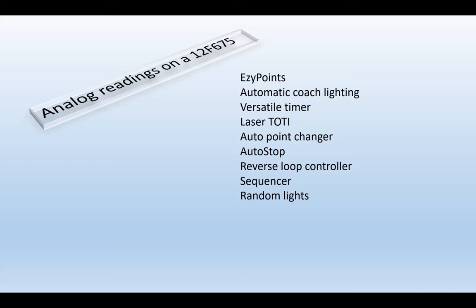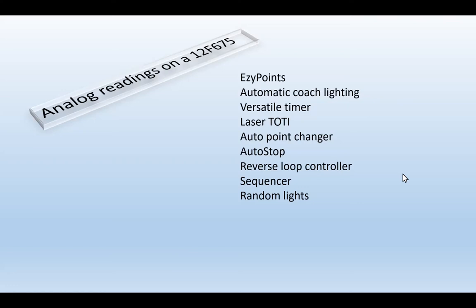Last Sunday we did a course on introduction to the PIC, and along the way we looked at some circuits that were reading voltages or light levels — analogue readings. I pulled out this list from the easy points kits; all of these have inputs that are not digital, not on/off switches, they've got varying voltage readings, and they all use the same 12F675 chip. So I thought it was worthwhile looking at how that actually works.